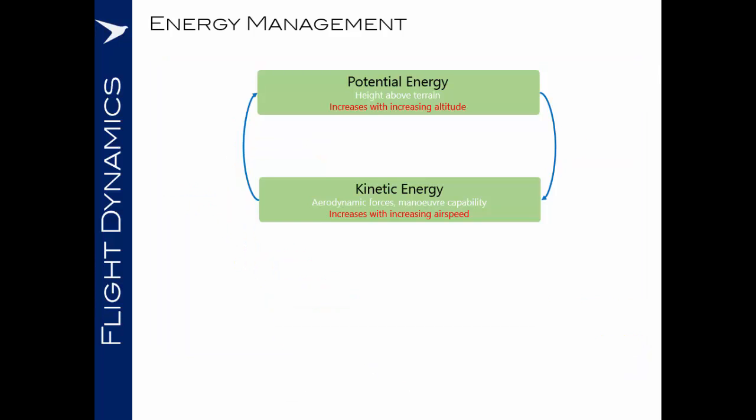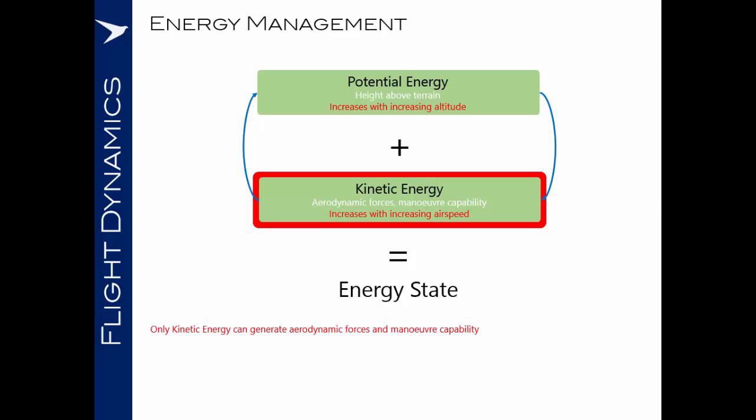The potential energy that we have in the airplane plus the kinetic energy gives us our energy state. And within this, for any given energy state, we have a zero sum game. We can trade our kinetic energy into potential energy by zooming and we can trade our potential energy into kinetic energy by diving. But the net result will be a trade off between these two types of energy. Only kinetic energy can generate the aerodynamic forces that we require to give us our maneuver capability.